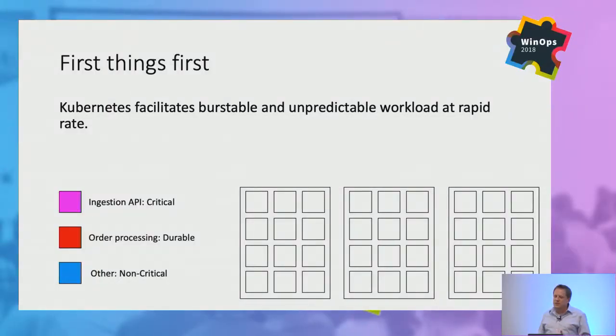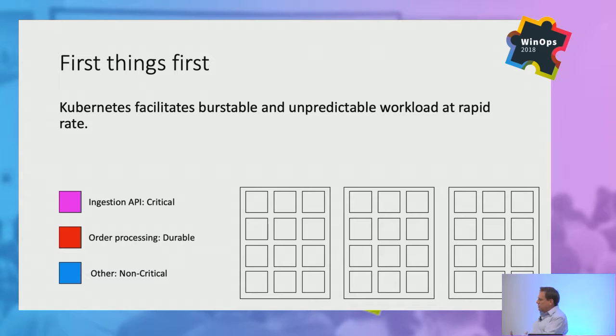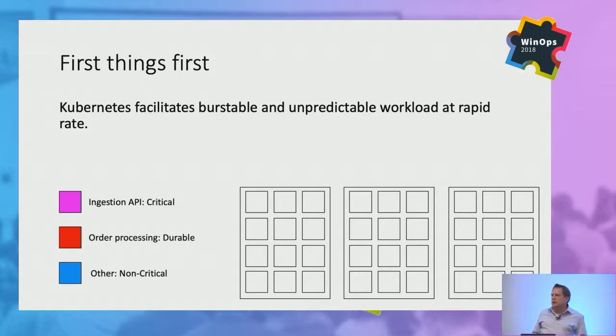Before we get into the operational aspects, I really wanted to talk about why do we have this conversation — why do things change from managing a data center in the old way? Kubernetes fundamentally has the possibility of changing how we deploy applications and how applications run. Kubernetes facilitates new capabilities in application architecture, such as burstable workloads, unpredictable workloads, and all of this happens at a very fast rate.